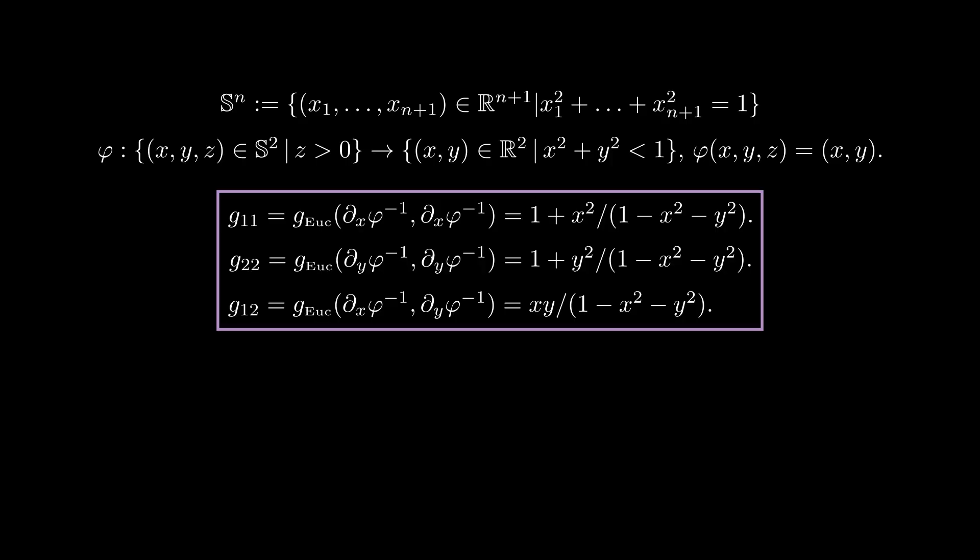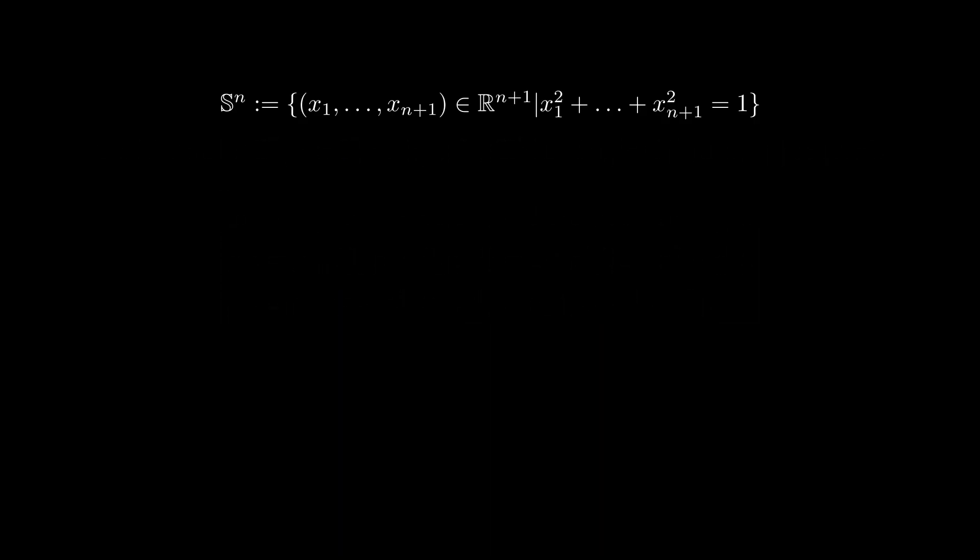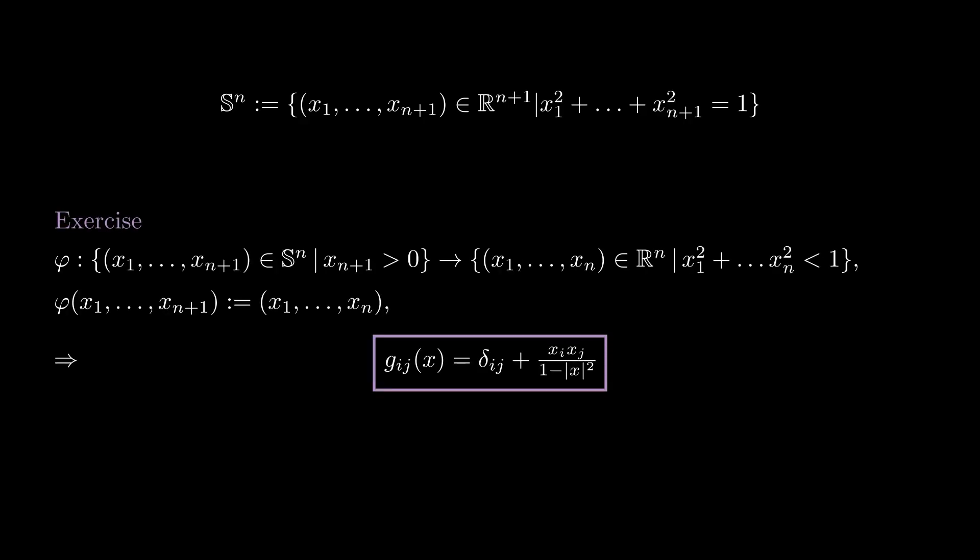I'll leave it as an exercise to prove a similar formula for the n-dimensional sphere when you use the chart that sends the upper hemisphere to the n-dimensional unit ball, when again we identify R^n with the points in R^{n+1}, whose last coordinate is 0. The same formula for the metric coefficients will work if you take a similar chart for the lower hemisphere or any other hemisphere.